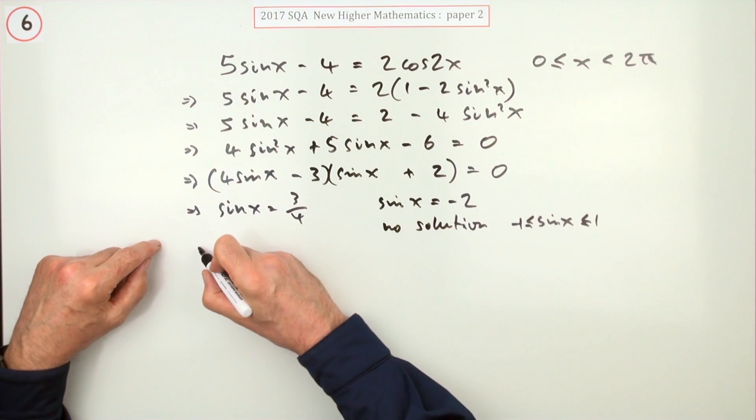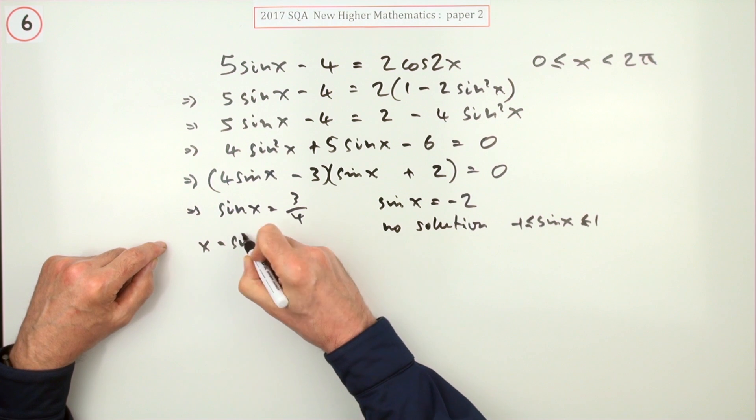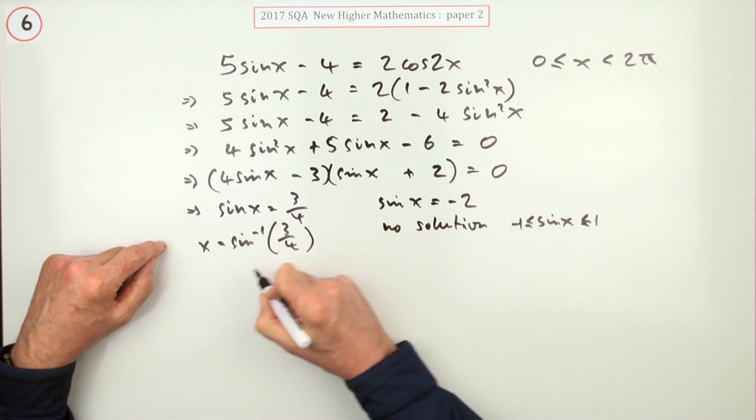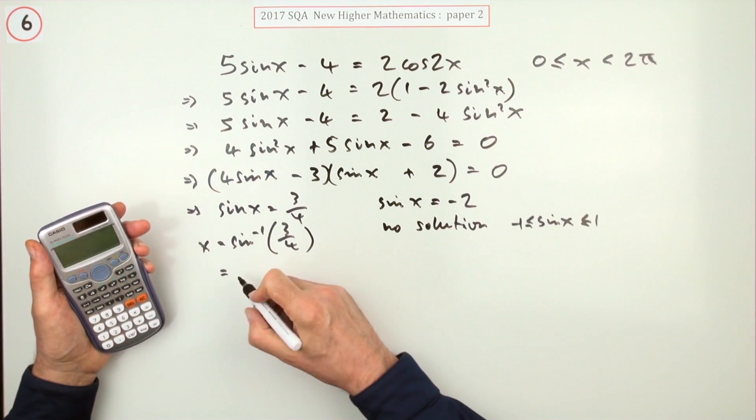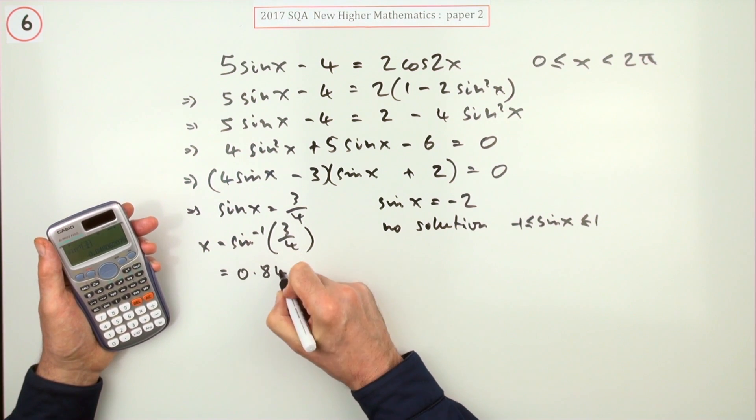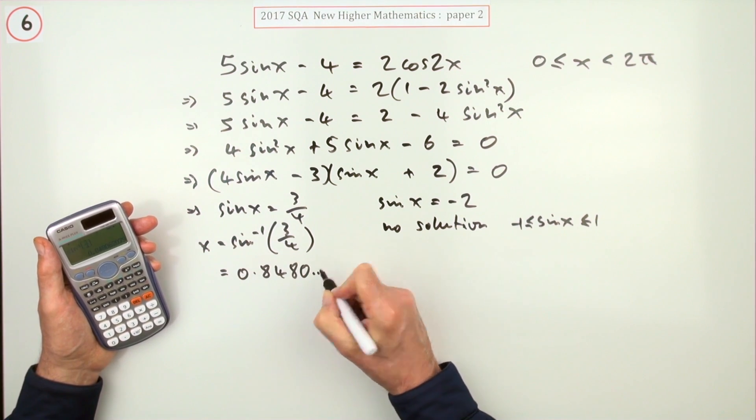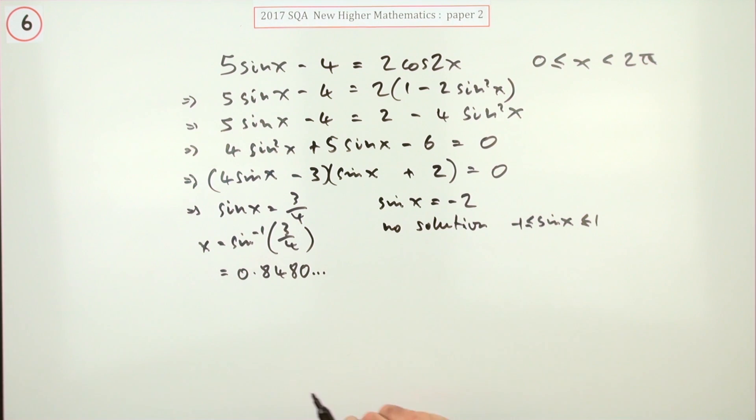Though I'll have to get the calculator out: inverse sine of three-quarters. Pop it into radian straight away, and then you'll get 0.8480 and so on. Now how are you going to round it off? Well, they'll be quite lenient I think in the marking of this, whether you keep three or two.